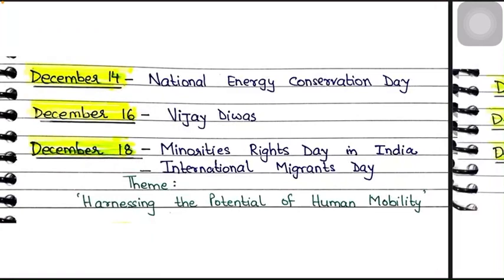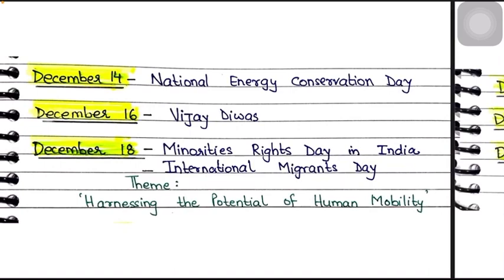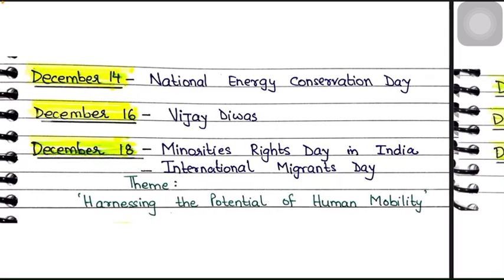December 16 is Vijay Divas, commemorating the victory of the Indian Armed Forces over Pakistan in the 1971 war, which led to the creation of Bangladesh. December 18 is the Minorities Rights Day in India, to promote and preserve the rights of minority communities. December 18 is also International Migrants Day, done to raise awareness about the protection of migrants and refugees. The theme was 'Harnessing the Potential of Human Mobility.'